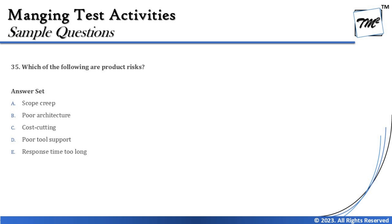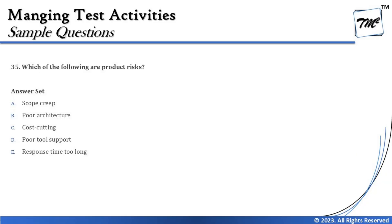Question 35 asks: which of the following are the product risks? A gentle reminder — any risk associated with the process of making the product, or that impacts the project directly — timeline, schedule, budget, people, resources — we put into project risk. Any risk that impacts the quality of the product or impacts the end user when the product is being used, we refer to as product risk. This is a simple definition to differentiate between the two.